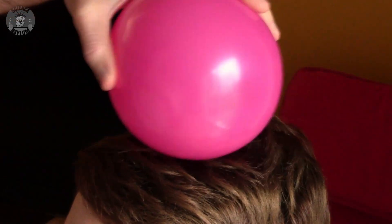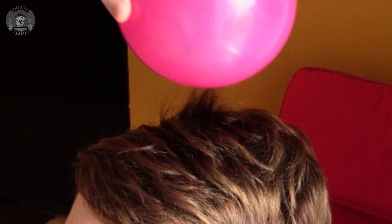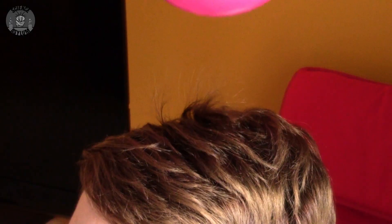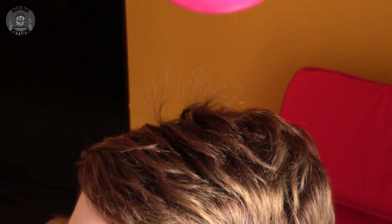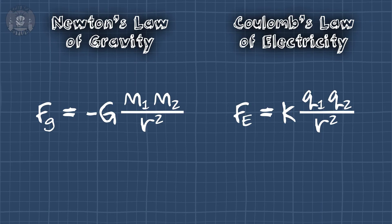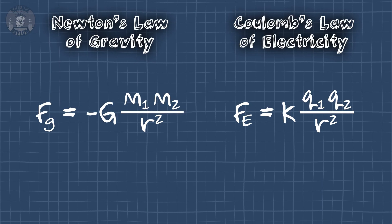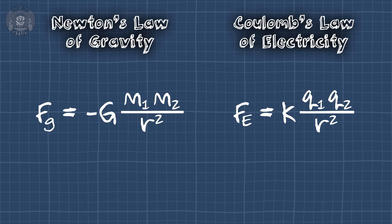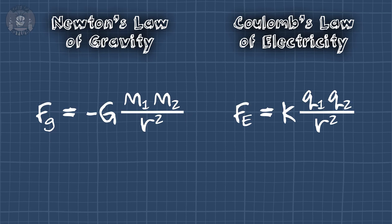If we rub a balloon against someone's hair, the balloon and the hair become attracted to each other. Now that they're charged, they don't even need to touch to affect each other. This is just like how masses attract in Newtonian gravity — we even said in the previous video there were a lot of similarities.